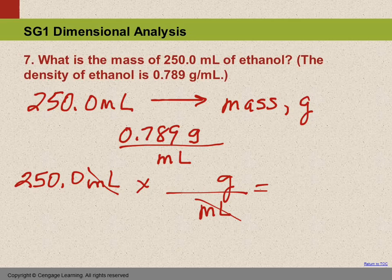And then we need the relationship between grams and milliliters. That's the density. So we look, what's the number in front of gram? It's 0.789. So that has to stay in front of gram. What's the number in front of milliliter? There was no number. If that bothers you, put a 1.